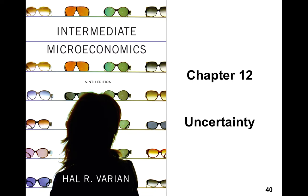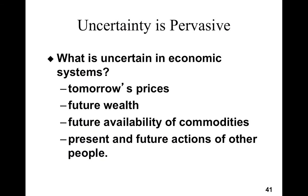Most of us know that uncertainty is the reality of life. If someone asks you to list what is uncertain in economic systems, here following would be a representative list. For example, tomorrow's prices — we do not know what the gas price would be tomorrow — future wealth, future availability of commodities. You like a shirt, you didn't buy it today, you do not know whether it's going to be available tomorrow. Present and future actions of other people. So uncertainty is pervasive.